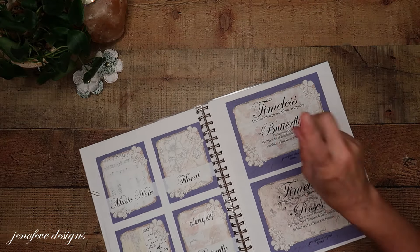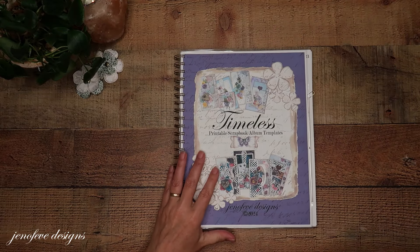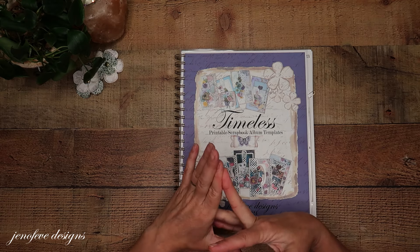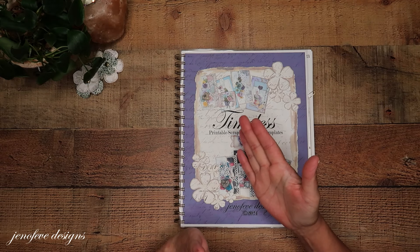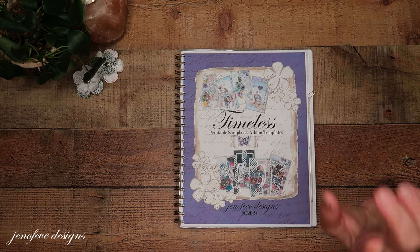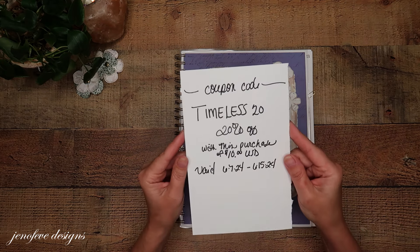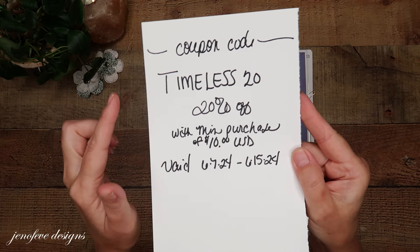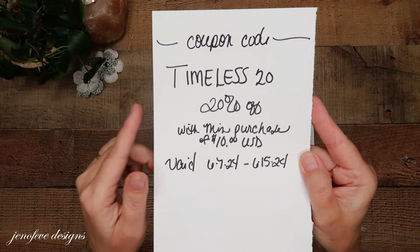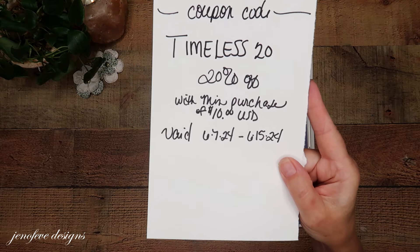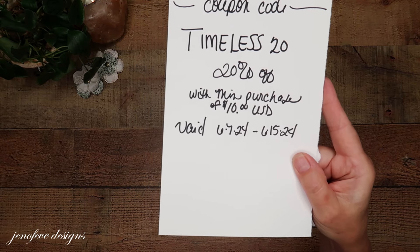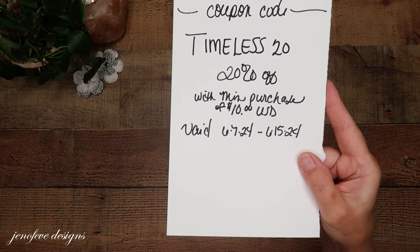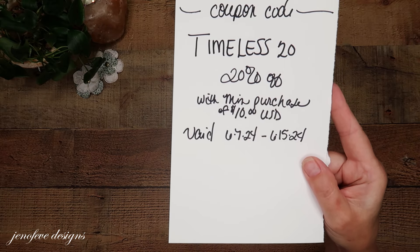Congratulations to the two winners. You have one week to contact me via that special email — all that information will be down below. There is a coupon code and it is TIMELESS20, all one word, no spaces. It's 20% off with a minimum purchase of $10 US dollars, and it's valid from the time this video goes public to June 15th, which I think is a Saturday — so that's a little over a week.